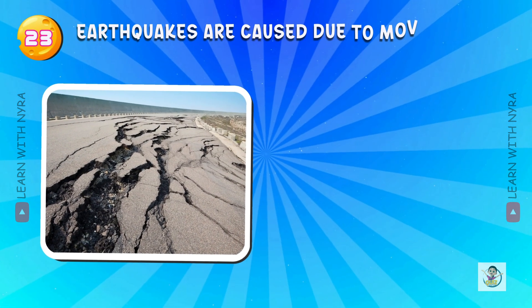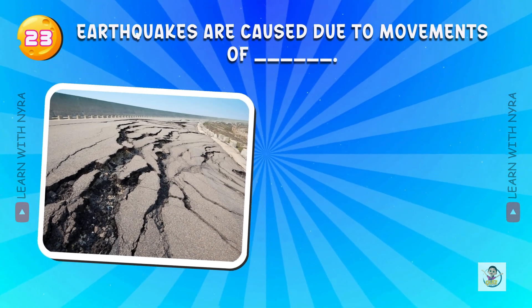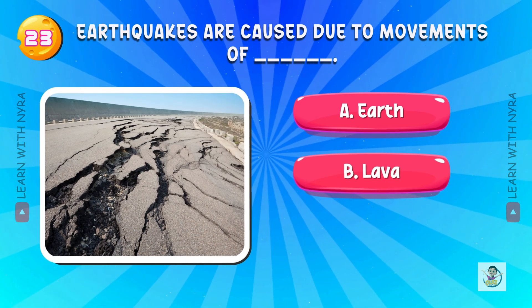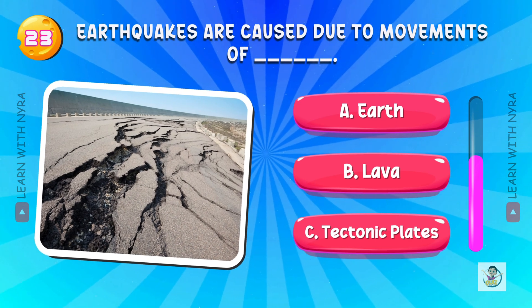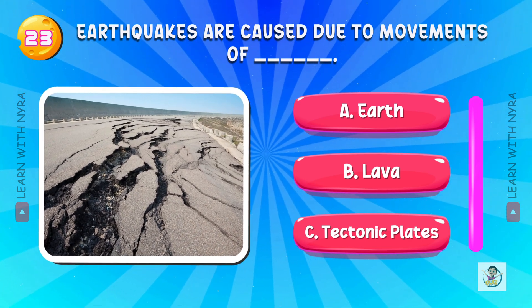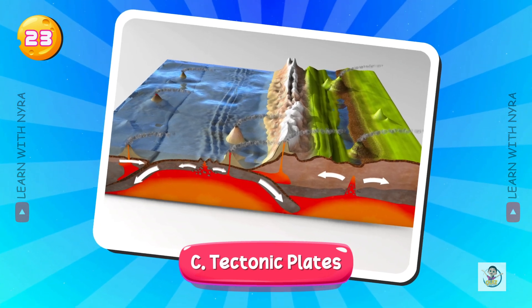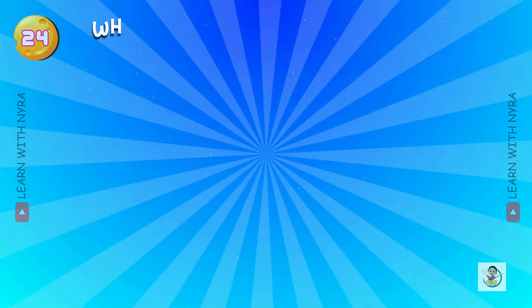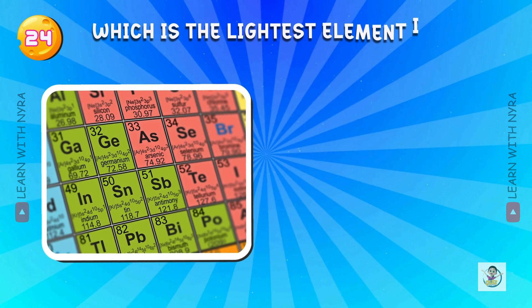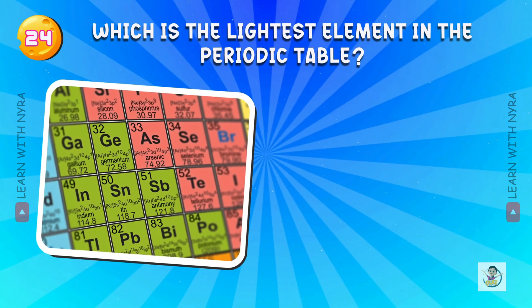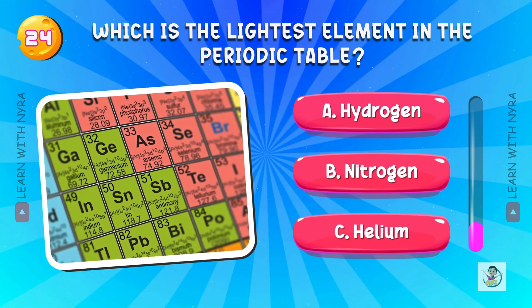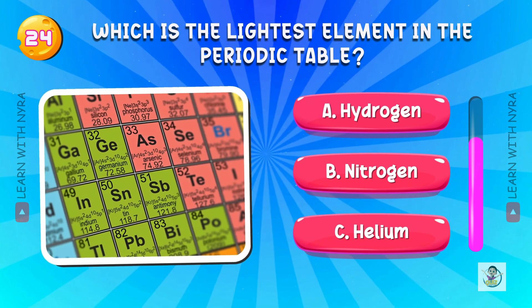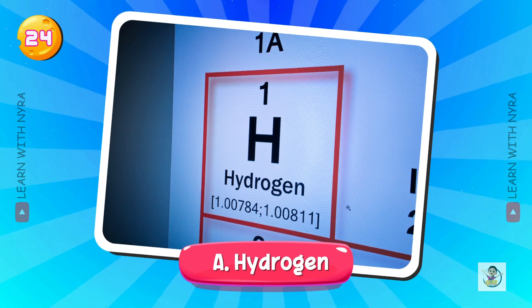Earthquakes are caused due to movements of A. Earth, B. Lava, C. Tectonic plates. And the answer is C. Tectonic plates. Which is the lightest element in the periodic table? A. Hydrogen, B. Nitrogen, C. Helium. And the answer is A. Hydrogen.